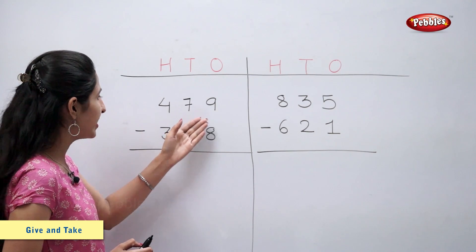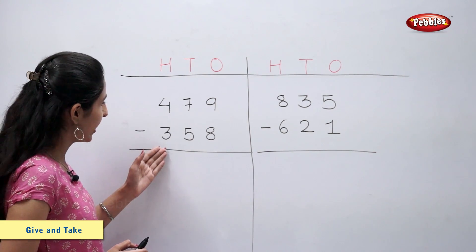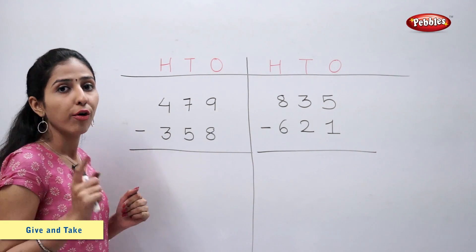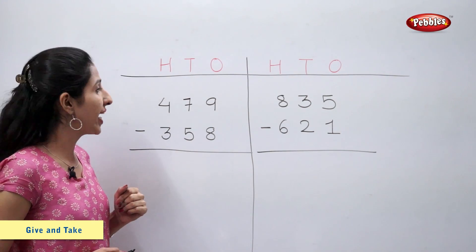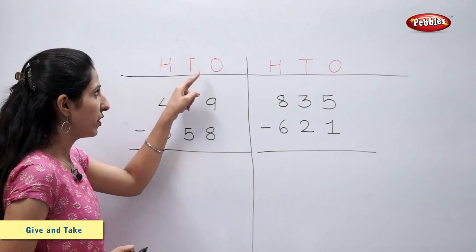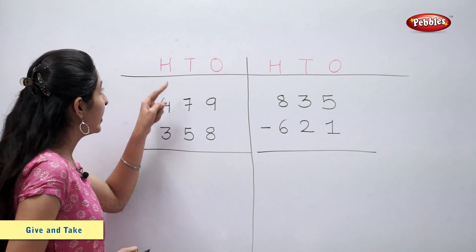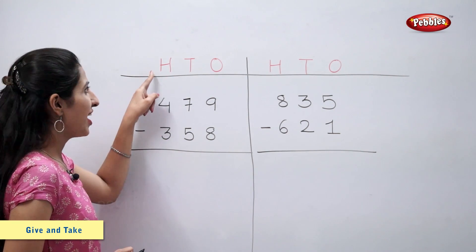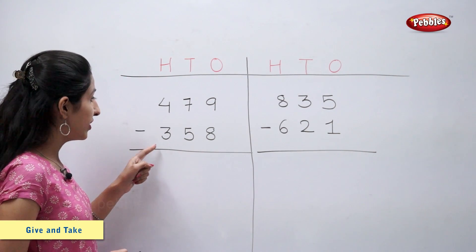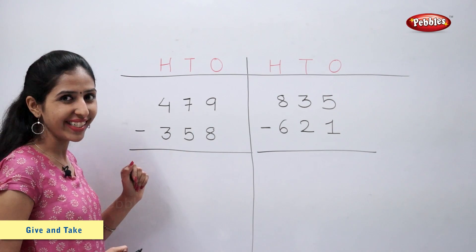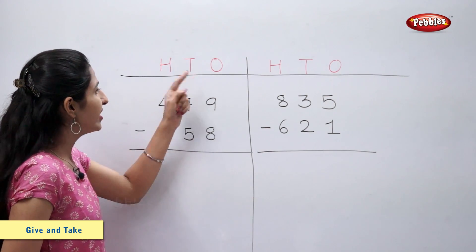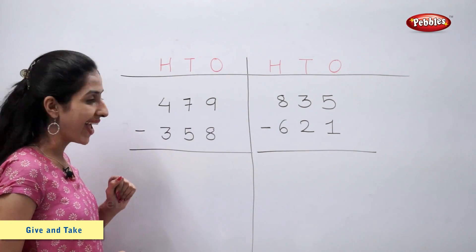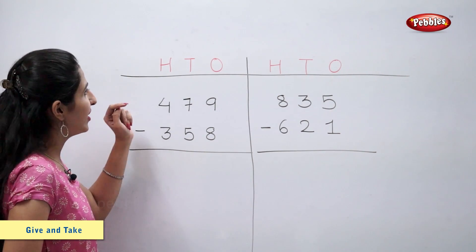479 minus 358. 479 means nine ones, seven tens, and four hundreds. 358 means eight ones, five tens, and three hundreds.